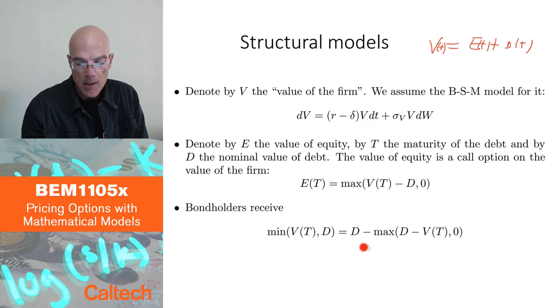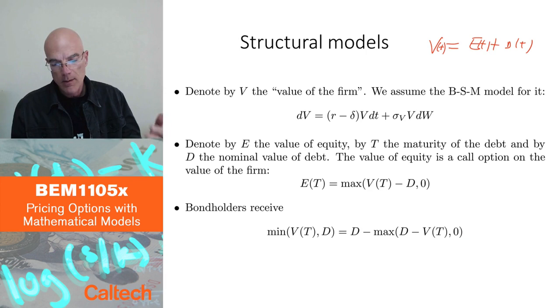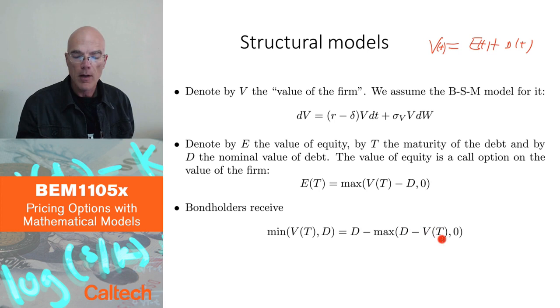Either they get the full amount, if the value of the firm is larger than D, they just get what was promised, the debt face value D, or if there is not enough money, they just get whatever is left in the firm. You can actually write this as D minus maximum of D minus V of T and zero. This is just simple algebra to check that these two things are the same. Why do we write it like this? Because now we can recognize that pricing the bond payoff, pricing the bond in this model is the same as pricing a constant, that's easy, just present value, minus the price of a put option on the value of the firm with the strike price D.